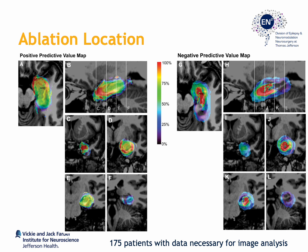We were able to perform this group analysis by co-registering all patient images to a common atlas space in a non-linear fashion. As a result, we were able to represent the ablation location for all patients in a single heat map. On the left-hand side is a positive predictive value map, representing a voxel-wise calculation of the likelihood of achieving seizure freedom if that particular voxel was ablated. On the right-hand side is a negative predictive value map, representing a voxel-wise analysis of the likelihood of not achieving seizure freedom if a voxel was missed in the ablation.